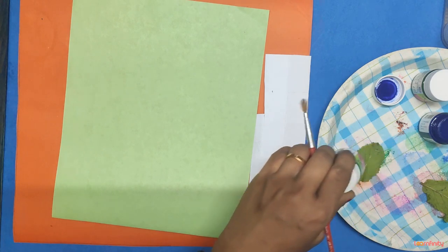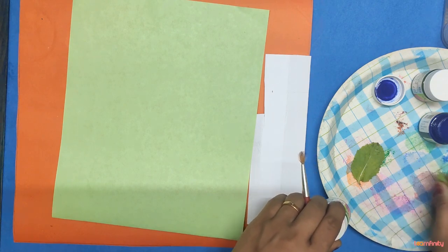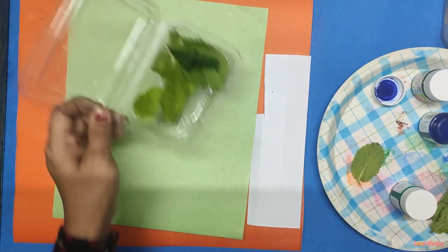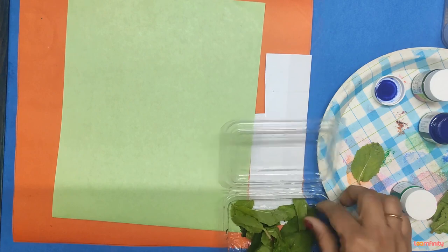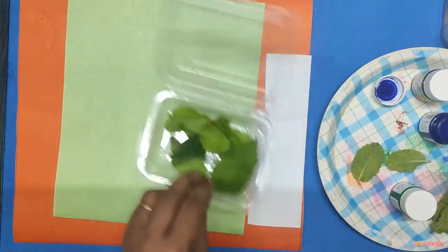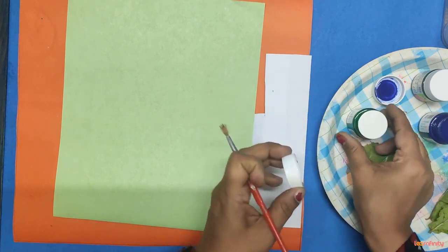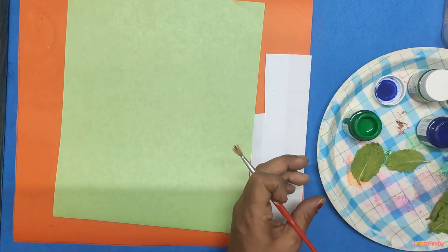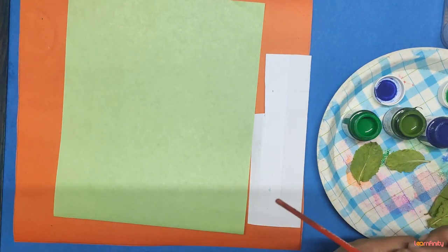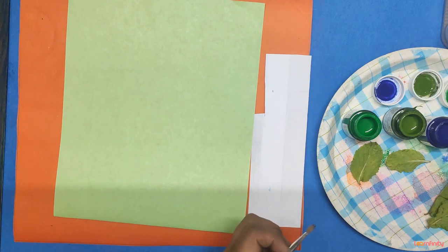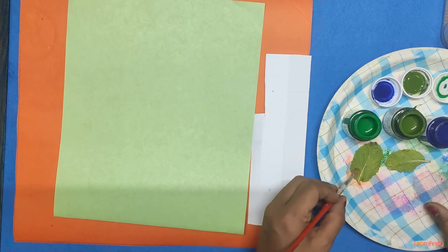These are some leaves which I have selected for today's activity. This leaf and one more I require, little bit pointed one. I have selected. Now I am opening my color bottles. I am taking shades of green, red. If you wish you can use white also. Now see, this is my leaf.